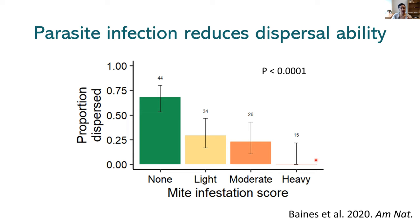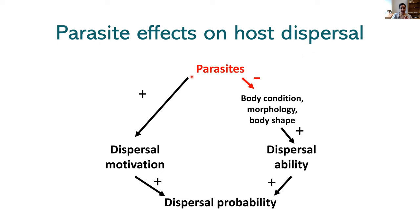This came as no surprise to us. The mites attach under the hemilytra or wing casings, and as they become engorged they push the hemilytra away from the body, exposing the fragile wings. Backswimmers with heavy mite infections often have rips in their wings or wings that are even torn all the way off. So we find that parasites have these two opposing effects: the risk of parasitism can increase dispersal motivation, but parasite infection can strongly reduce dispersal ability.